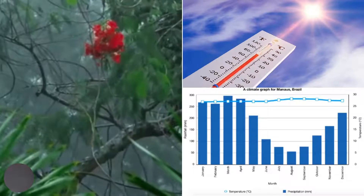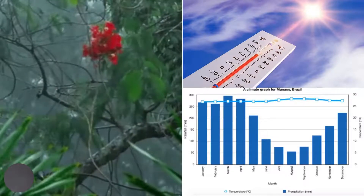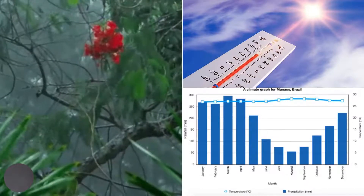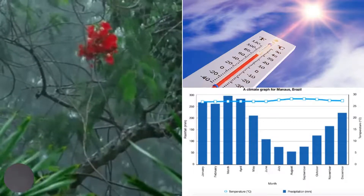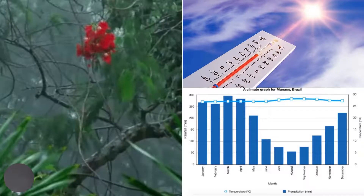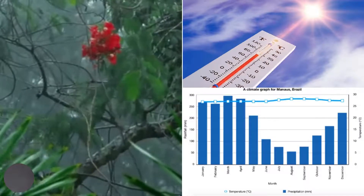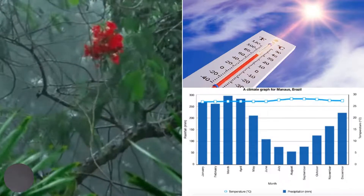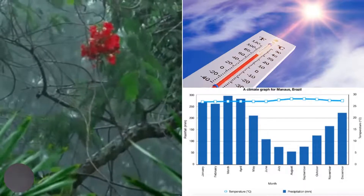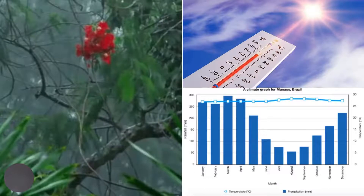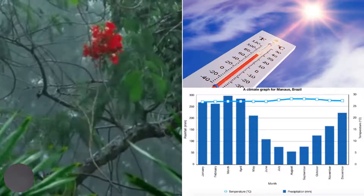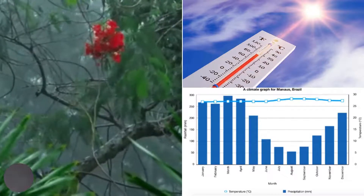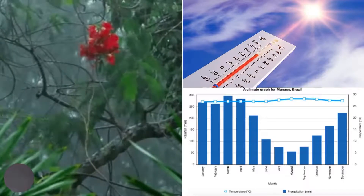The climate associated with the tropical rainforest is the equatorial climate. The climate graph shows that rainfall is heavy and well distributed throughout the year. The annual rainfall is 2000 millimetres and this is largely the result of the ITCZ. In most places the ITCZ passes twice a year, bringing two very heavy periods of rainfall. This is called double maximum.